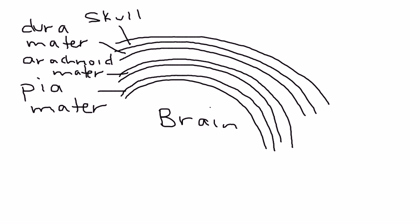As you can deduce, subdural hematoma is a collection of blood beneath the dura, so it would be this area right here. This can be easily seen on a CT scan — we'll talk a little bit more about that later.